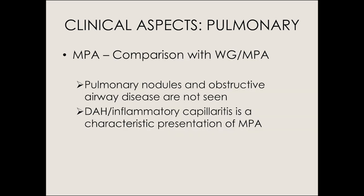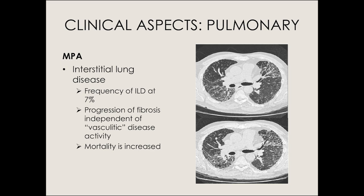MPA typically does not produce nodules or significant parenchymal disease. Being less granulomatous and more vasculitic, it tends to present through capillaritis — small vessel involvement in the lungs — resulting in the DAH pattern of small vessel inflammation with bleeding, rather than the nodules, cavities, or masses more characteristic of GPA's granulomatous features.